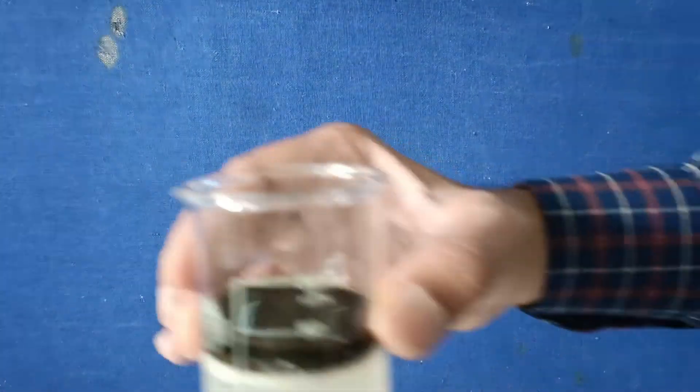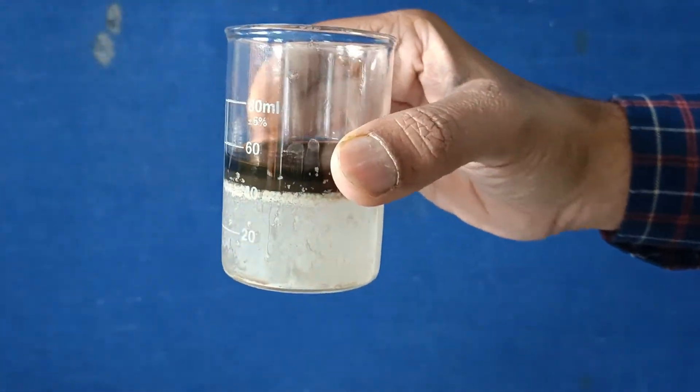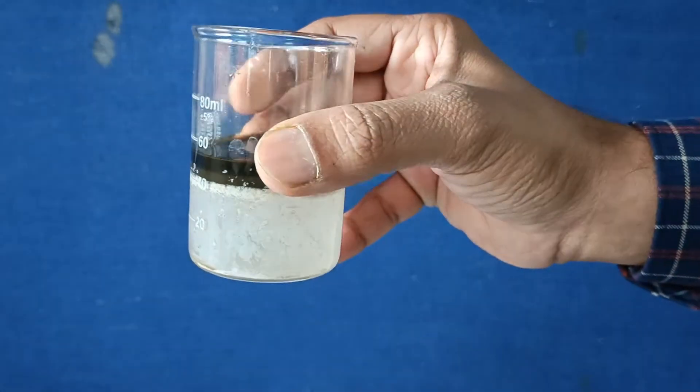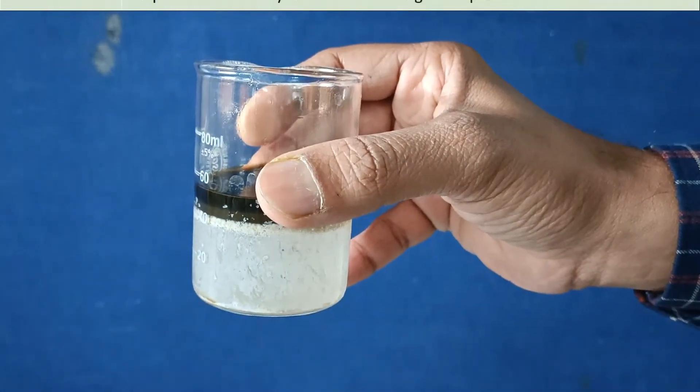A mixture of oil and water. How to separate them? You can see very well that oil floats on water. This is because the density of oil is less than the density of water.